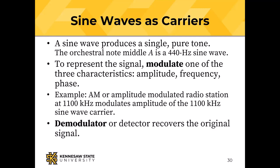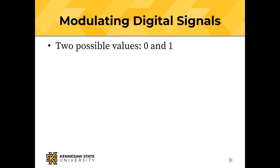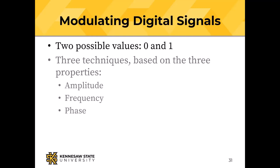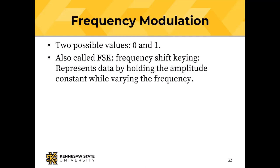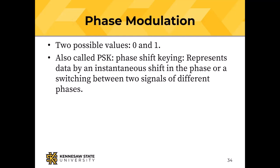For digital signals with two possible values (0 and 1), there are three modulation techniques: amplitude shift keying (ASK) holds frequency constant and varies amplitude; frequency modulation holds amplitude constant and varies frequency; phase modulation varies the phase with instantaneous switching between signals of two different phases.